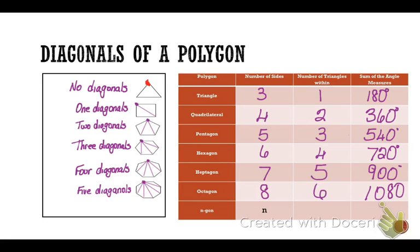Now hopefully, you can see a pattern here. From the number of sides to the number of triangles is minus two, so three minus two gives me one, four minus two gives me two.